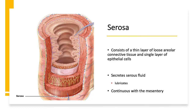The final and outermost layer is the serosa, consisting of a thin layer of connective tissue and a single layer of epithelial cells that secrete serous fluid — a watery, slippery fluid that lubricates and prevents friction between digestive organs. The serosa is also continuous with the mesentery, which suspends the digestive organs from the inner wall of the abdominal cavity so they're not loose inside.